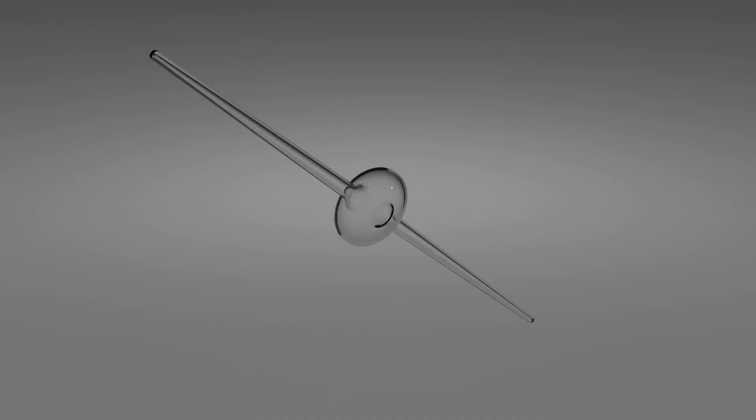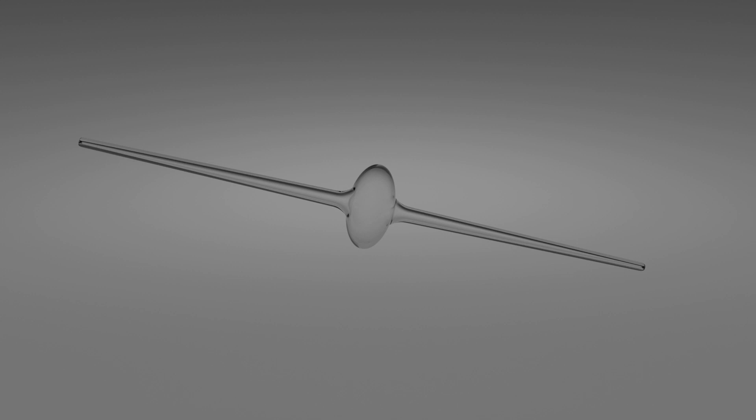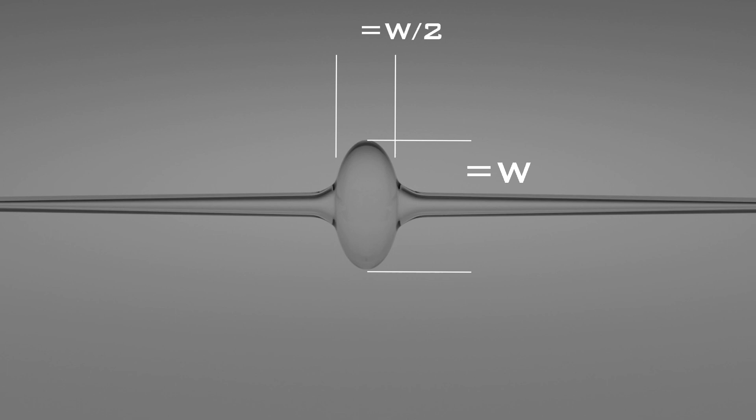It starts with the setup bubble. The shape is important. My formula is that the bubble should be half as long as it is wide, and half the diameter of your intended finished foot. It should be perfectly round and symmetrical too, but twice as wide as it is long is the secret to getting it right every time.